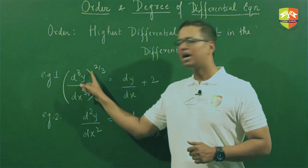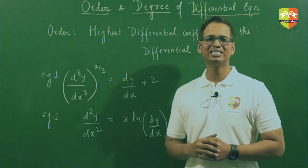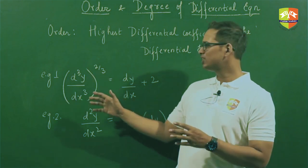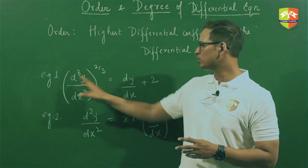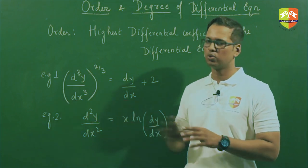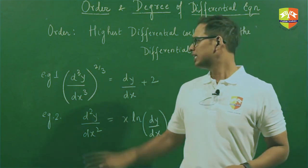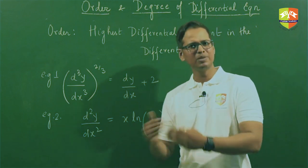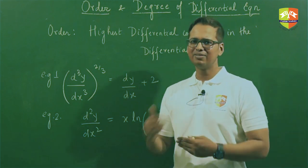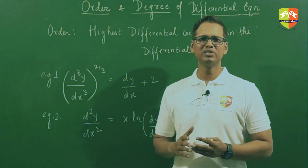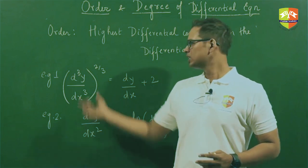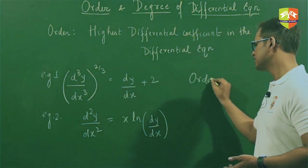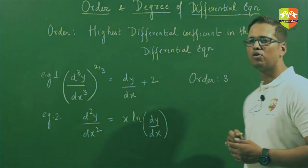Please note: this power has no relevance while deciding the order of the differential equation. Do not take into account that since there is a power of 2/3 it should become d²y/dx². That doesn't happen. The order is nothing but the maximum number of times the derivative of y has occurred with respect to x in that equation. So this is an order 3 differential equation.